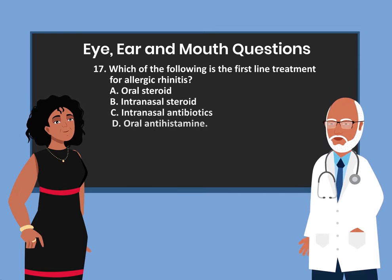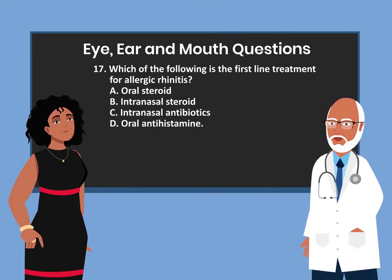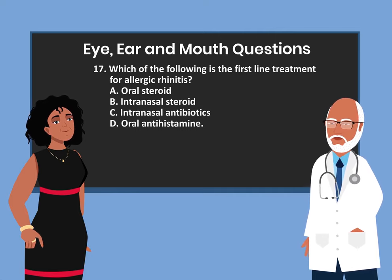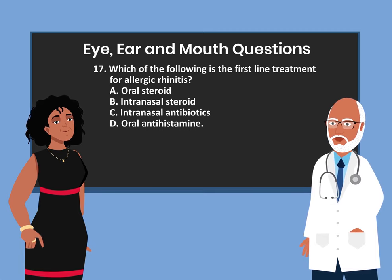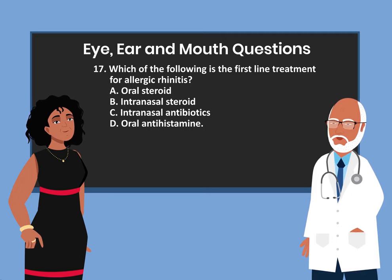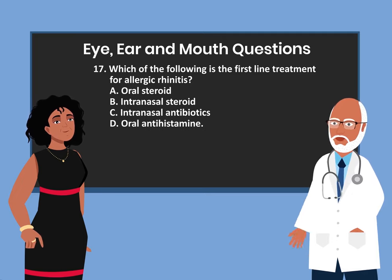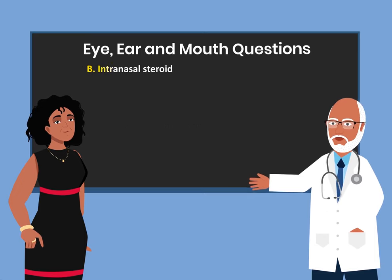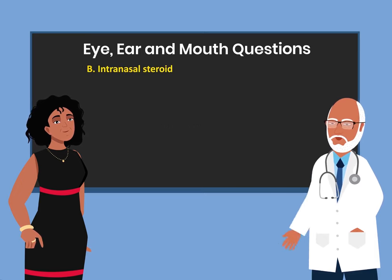Question 17. Which of the following is the first-line treatment for allergic rhinitis? A. Oral steroid. B. Intranasal steroid. C. Intranasal antibiotics. D. Oral antihistamine. The answer is B. Intranasal steroid.